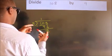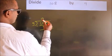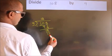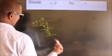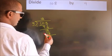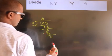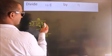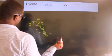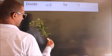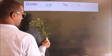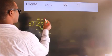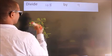9 times 2 is 18. Now we subtract. We get 0. After this, no more numbers to bring down, and we got remainder 0. So this is our quotient.